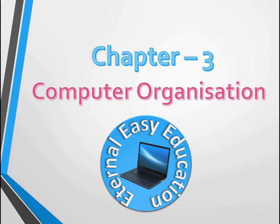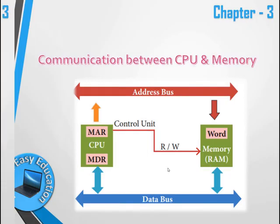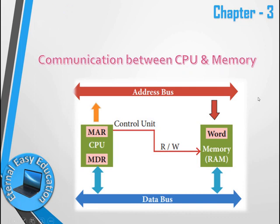Hello students, welcome to Eternal Easy Education. In this session, Chapter 3: Computer Organization. The content covers data communication between CPU and memory. The main memory is RAM. The CPU has two registers: the Memory Address Register (MAR) and the Memory Data Register (MDR). Data is transferred between CPU and memory through these registers, and there are two transactions: read and write, controlled by the control unit.